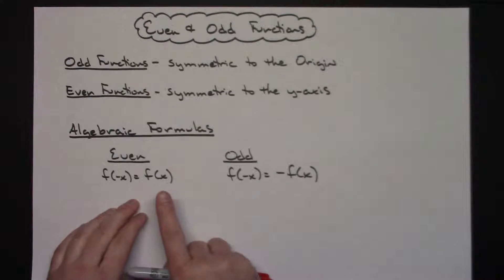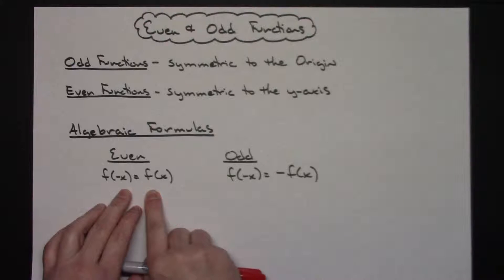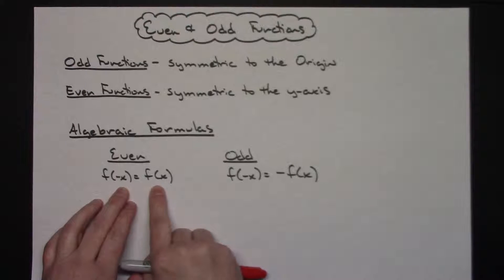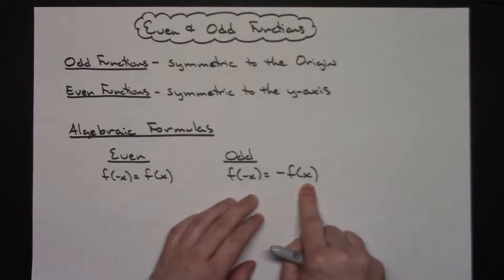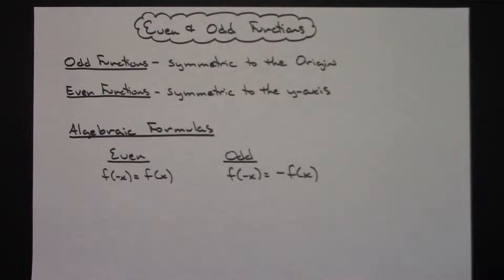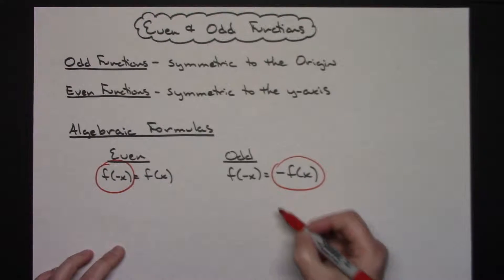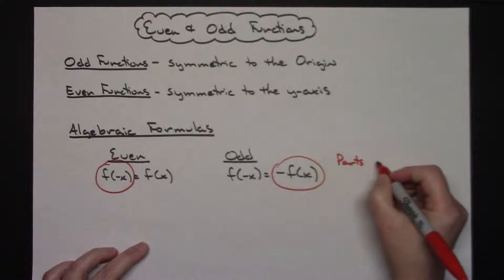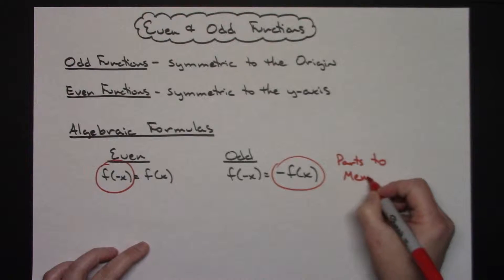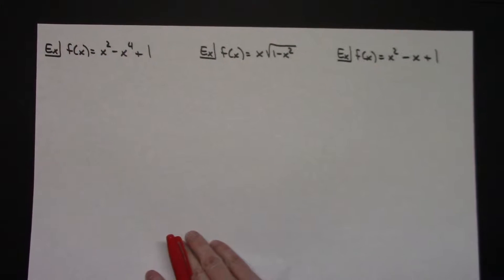To work these out algebraically, textbooks generally give two formulas. The formula for determining even is: if f of negative x equals f of x. For an odd function: if f of negative x equals negative f of x. The way I do this, I always test for even first, then test for odd. That way I only need to remember those two specific parts of the formulas, which shortens things and makes the process a bit easier.